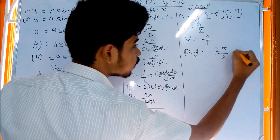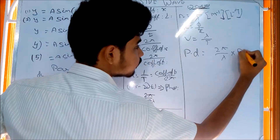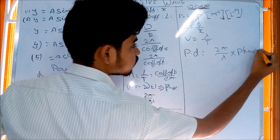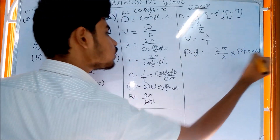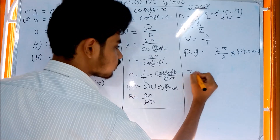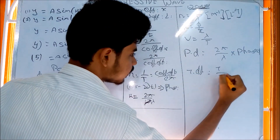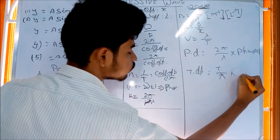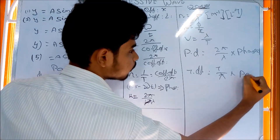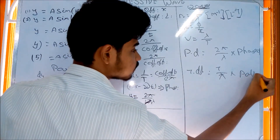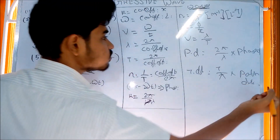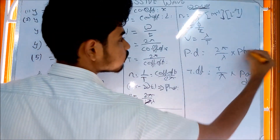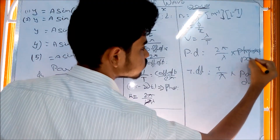Phase difference is equal to (2π/λ) multiplied by the path difference. This is how phase difference relates to path difference in progressive waves.